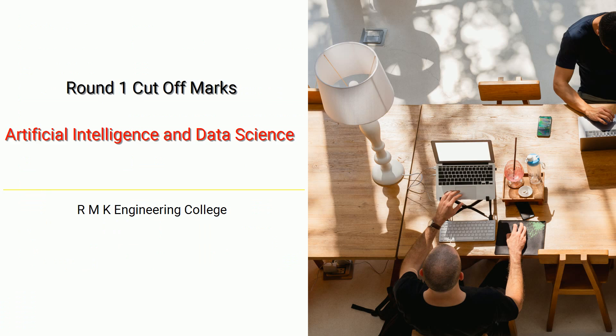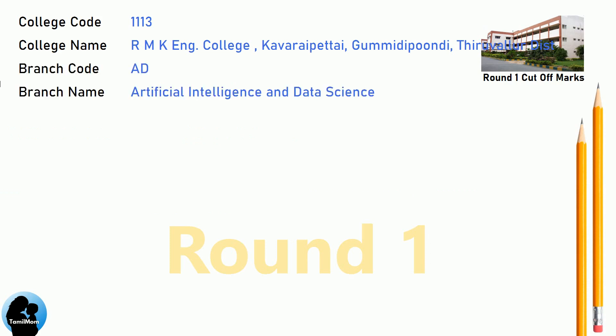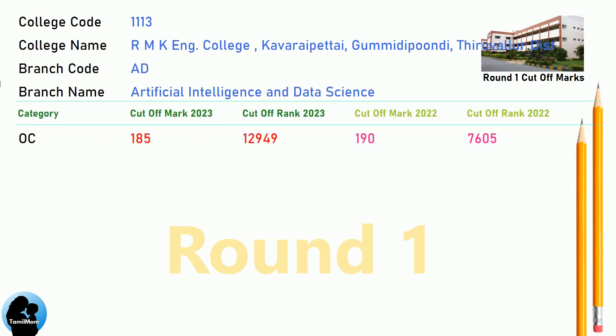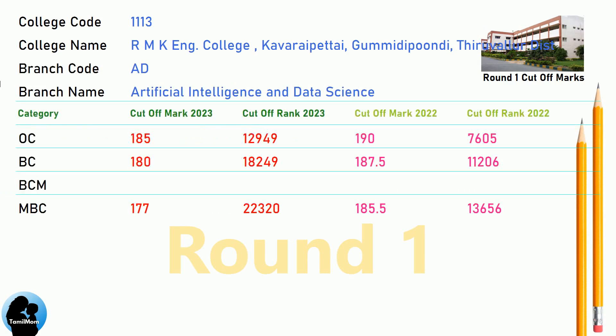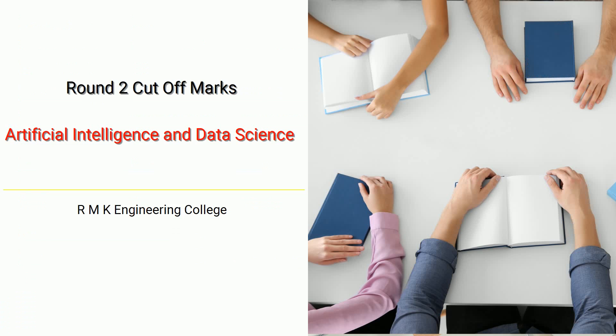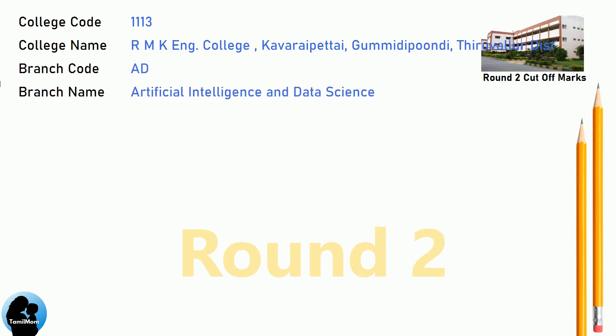DNA Round 1 Cut-Off for RNK Engineering College in Artificial Intelligence and Data Science. DNA Round 2 Cut-Off for RNK Engineering College in Artificial Intelligence and Data Science.